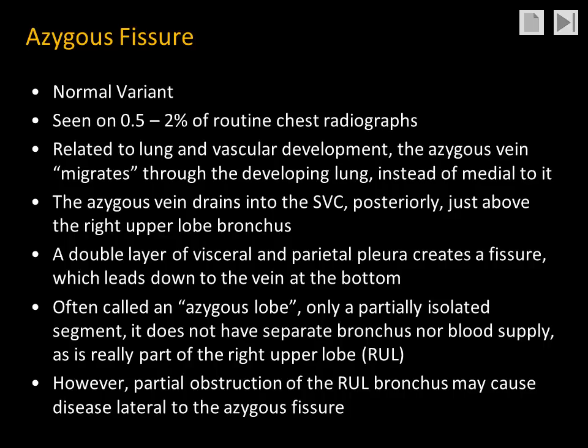As it migrates through the lung, the azygous vein pulls down a double layer of visceral and parietal pleura, creating a fissure which leads down to the vein at the bottom. Because there are four layers of pleura, we very commonly see a white line leading down to the rounded opacity that represents the azygous vein.